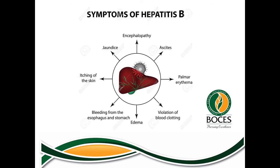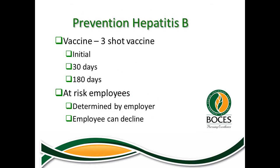Symptoms of hepatitis B can be very similar to those of hepatitis A, with the exception that it can be passed from person to person through blood or intimate contact. There is a vaccine for hepatitis B — it is a three-shot vaccine given initially, then at 30 days, and then 180 days after the initial shot.